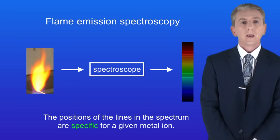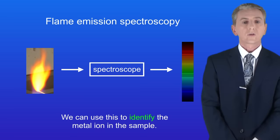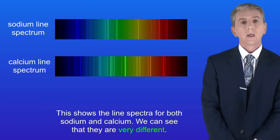The key point here is that the positions of the lines in the spectrum are specific for a given metal ion. So we can use this to identify the metal ion in the sample.